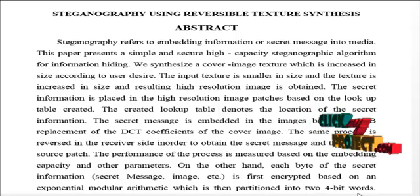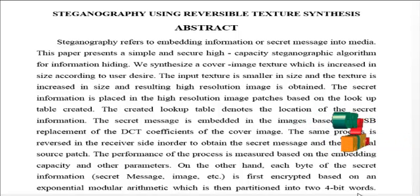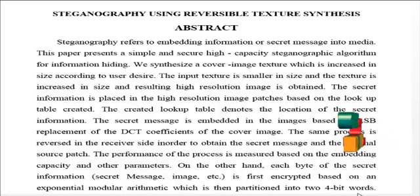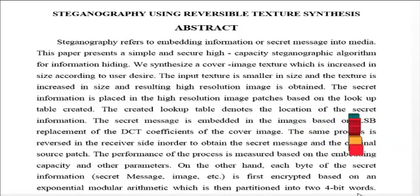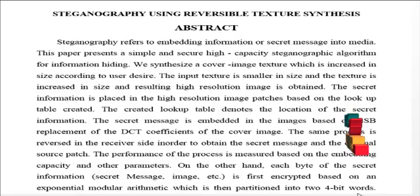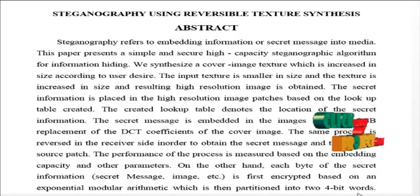Since the secret information is hidden in the DCT coefficients of the original patches, it is well secured. Because it is located in a high-resolution image of differing sizes, confusion arises regarding the locations, and for that we create a lookup table. This lookup table denotes in which locations we are placing the secret information.